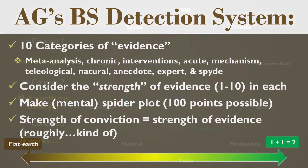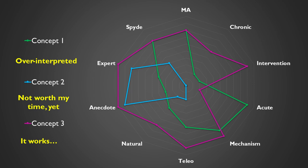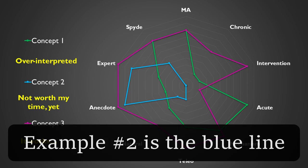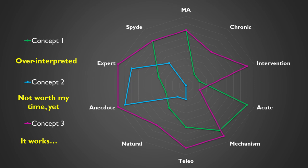I'll give you examples of what this might look like. I've plotted all 10 evidence categories. Example one: limited anecdotes, experts aren't endorsing it, but there's some acute mechanistic or molecular research — so maybe you're just over-interpreting cell culture or molecular signaling data. Example two: lots of anecdotal and experimental evidence, but basically no intervention studies, it doesn't make teleological or natural sense — I'd say this is yellow, not worth my time yet, but I'm paying attention as the science evolves.